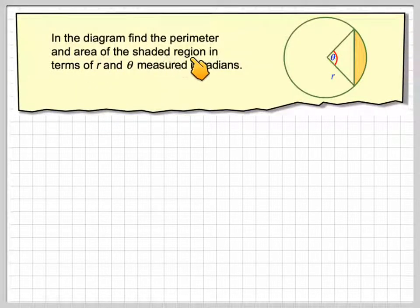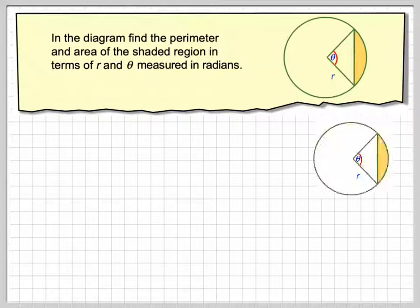In the diagram, find the perimeter and area of the shaded region in terms of R and theta measured in radians. Okay, so we've got our diagram. We have to first of all find the perimeter, so we're going to need to find that distance and that distance all together.